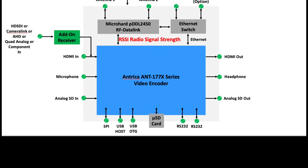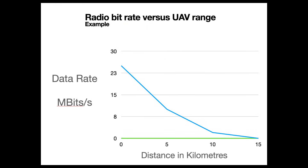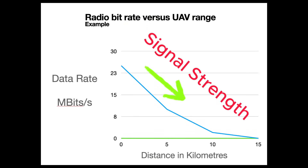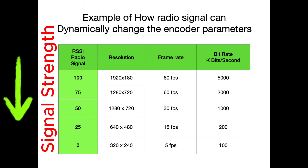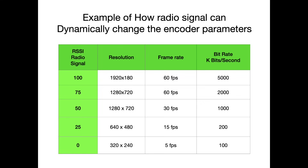Looking at what radio signal strength does — you can see in this overlay that the radio signal is affecting the amount of data that can get through on the radio link. Obviously as the signal strength diminishes, so does the data rate, and as the data rate diminishes, what we're trying to do is compensate by changing the parameters of the video encoder, such as bitrate, frame rate, and resolution. So let's have a look at how this actually affects the video quality.